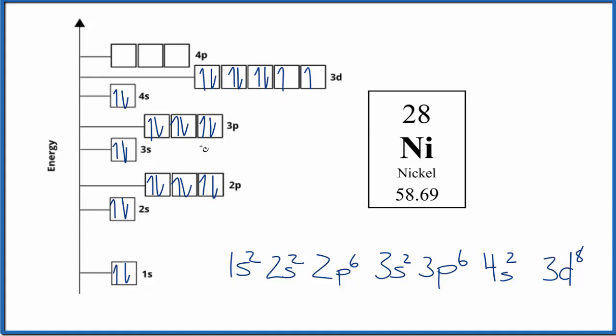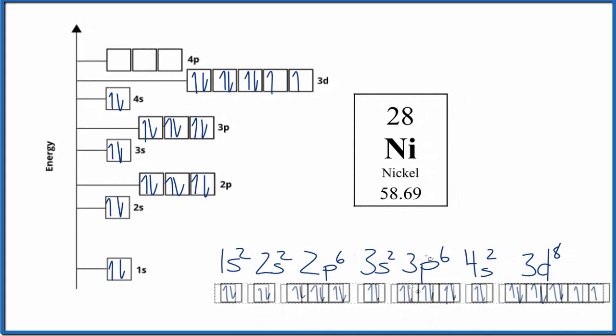And this is the atomic orbital diagram for nickel. You could also write it like this. Again, it's the same thing. We're just trying to show where those electrons are around the nucleus of the nickel atom.